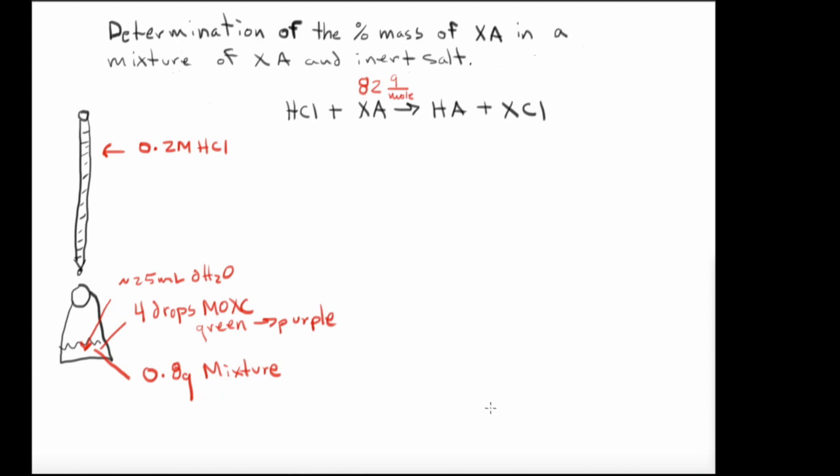Now, there's going to be a series of things that we have to accomplish. Let me go ahead and we will put the goals, the things that we need to accomplish here on a different screen. So number one, we're going to have to determine the mass percent of XA that is in the mixture. That's number one.